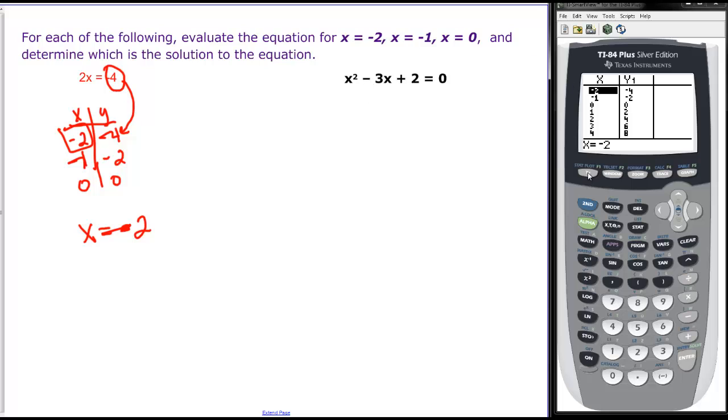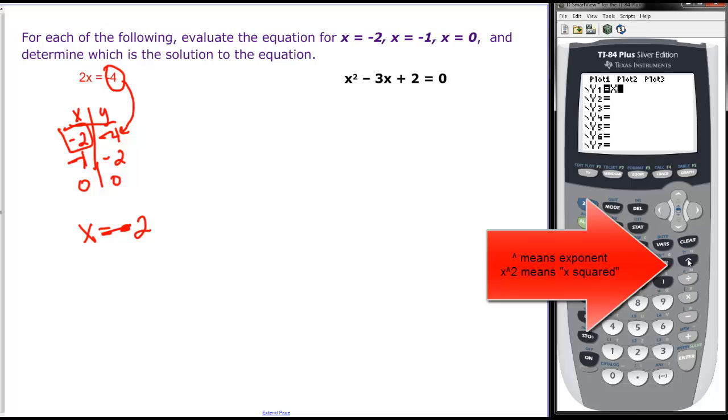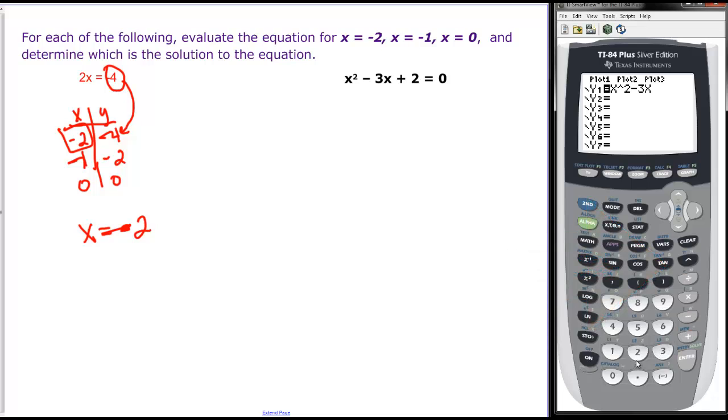Let's try the next one. We're going to put in x squared minus 3 times x plus 2. And we want it to be equal to 0. That's what we're going to look for for y. So we're going to come into our table.